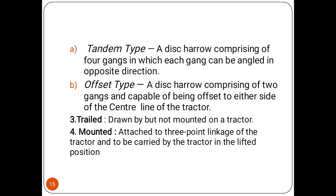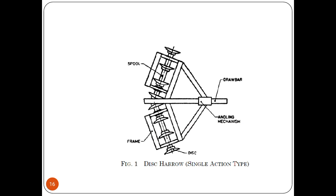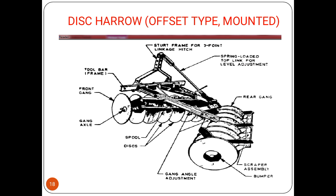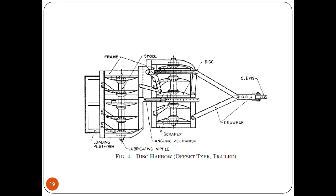The trail type disc harrow is drawn by but not mounted on the tractor. The mounted type is attached to the three-point linkage of the tractor and is carried by the tractor in the lifted position. You can see the disc harrow single action type, the disc harrow tandem type, the disc harrow offset type, and the mounted type disc harrow, along with their different parts. This is the disc harrow offset type but in trail configuration.